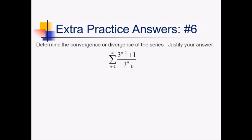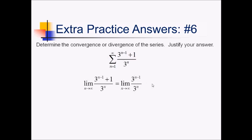To figure out the convergence on this problem, as always we start with the nth term test, taking the limit as n approaches infinity of all this. I'm going to write it out because it works out well for us. As n approaches infinity, we can forget about the +1, so we really just have 3^(n-1) over 3^n. Subtracting the exponents gives 3^(-1), or simply 1/3. Since this does not equal 0, this is going to diverge by the nth term test.